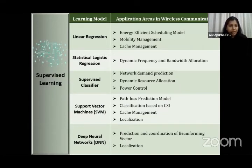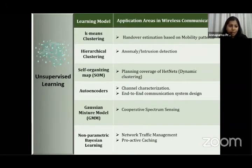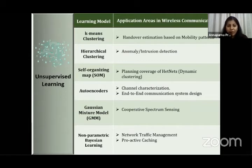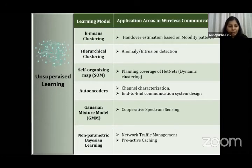Unsupervised learning takes unlabeled data as input, trying to find patterns and relationships within the data. For example, in clustering, it can be useful for organizing edge devices. Auto-encoders, which are deep artificial neural networks, are used to parameterize channel parameters and for end-to-end communication deployment. Unsupervised learning is also used for dimensionality reduction and feature engineering.